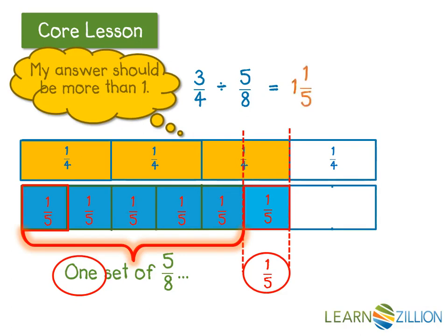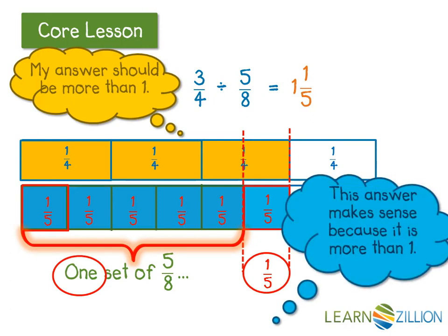So 3 fourths divided by 5 eighths equals 1 and 1 fifth. This answer makes sense, because it is more than 1.